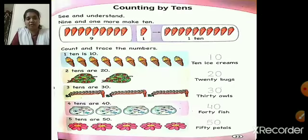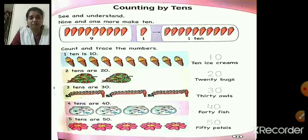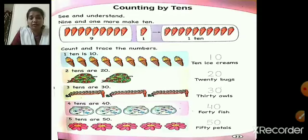So when you open page 33, this is what you can see — counting by tens. Write today's date. Now just see what I am reading from the book. See and understand. In the first picture children, we can see carrots. We can see carrots in three groups. In the first group it says nine carrots, and in the second group it says one carrot.